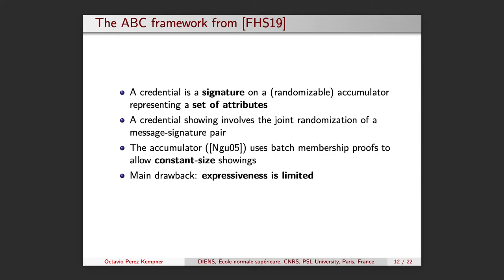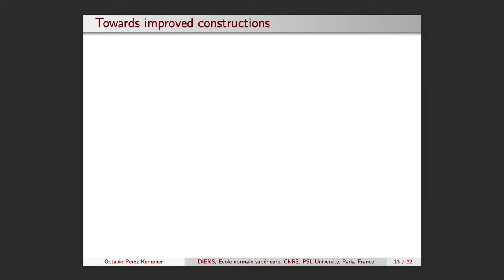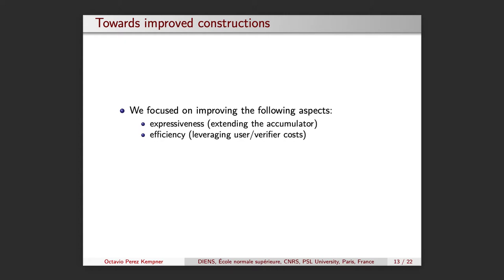Taking the previously mentioned points into account, we focus on improving the following aspects when compared to the previous work from FHS 19. Expressiveness, extending the accumulator. Efficiency, leveraging user and verifier computational costs. Security model, moving away from constructions based on the generic group model to one in the standard model requiring a common reference string.